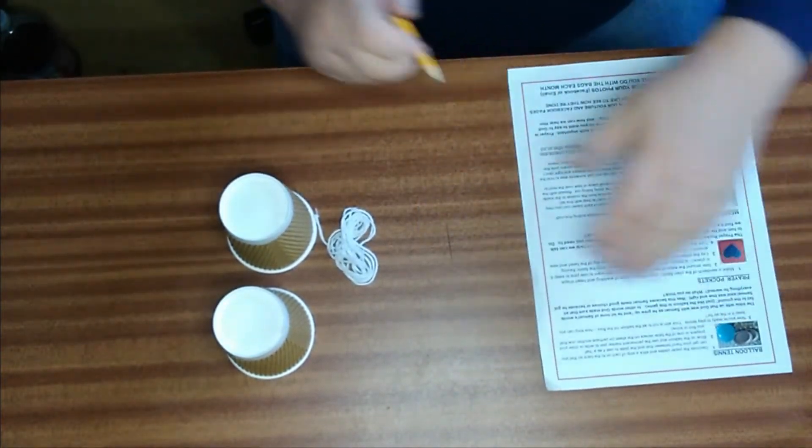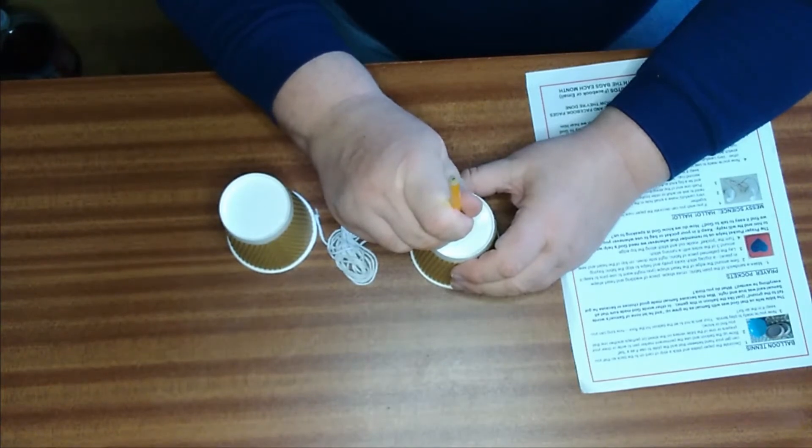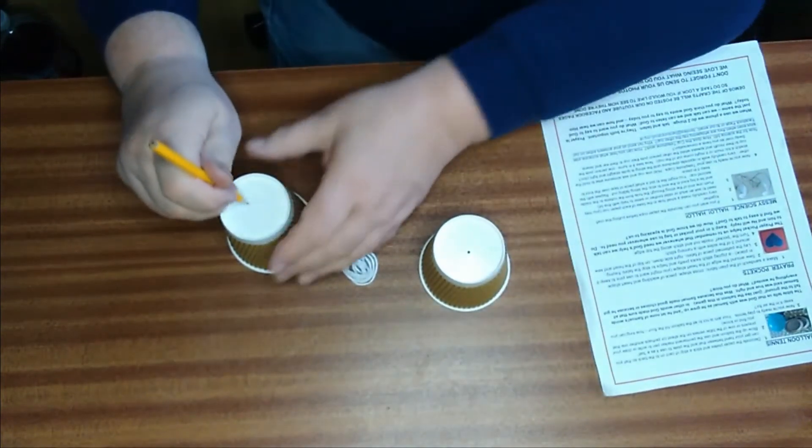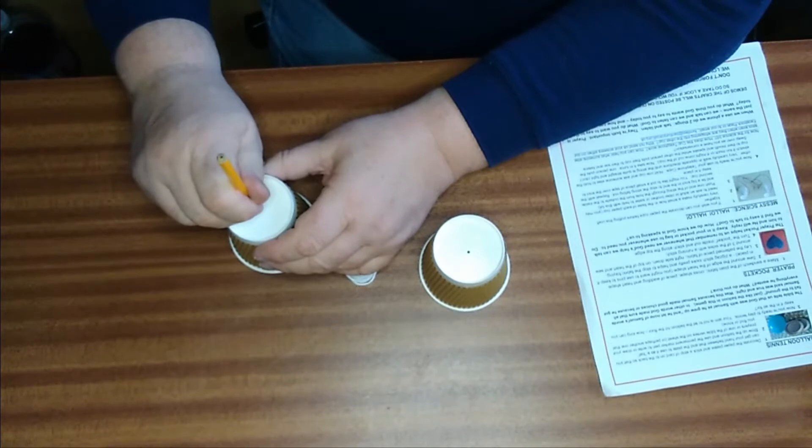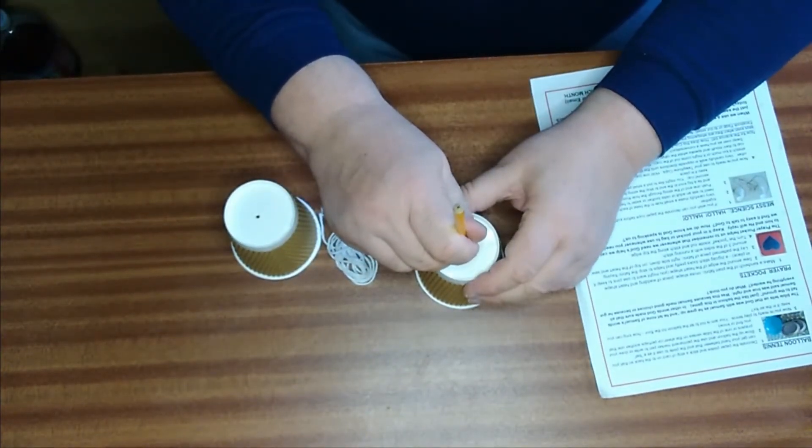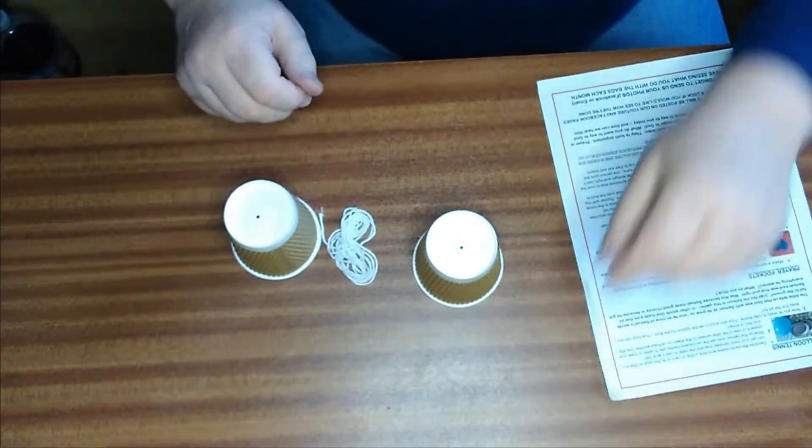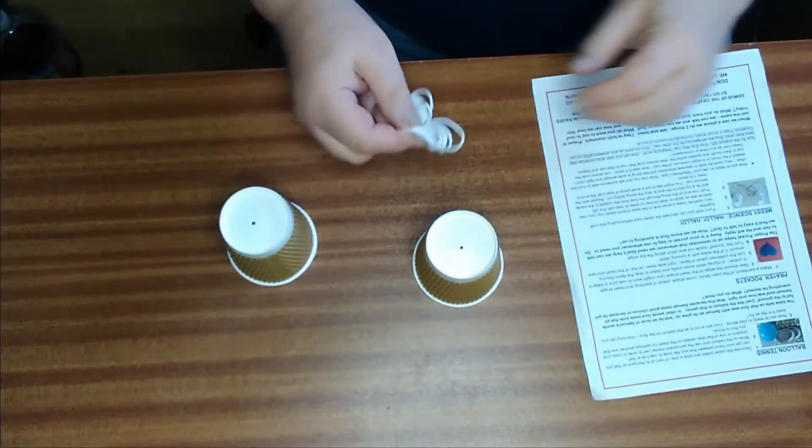If you use something very sharp, be very careful. Start by making a small hole in each cup. It needs to be big enough to let the string through, but not so big that you can't tie it off with a knot. You don't want the knot to pull through.